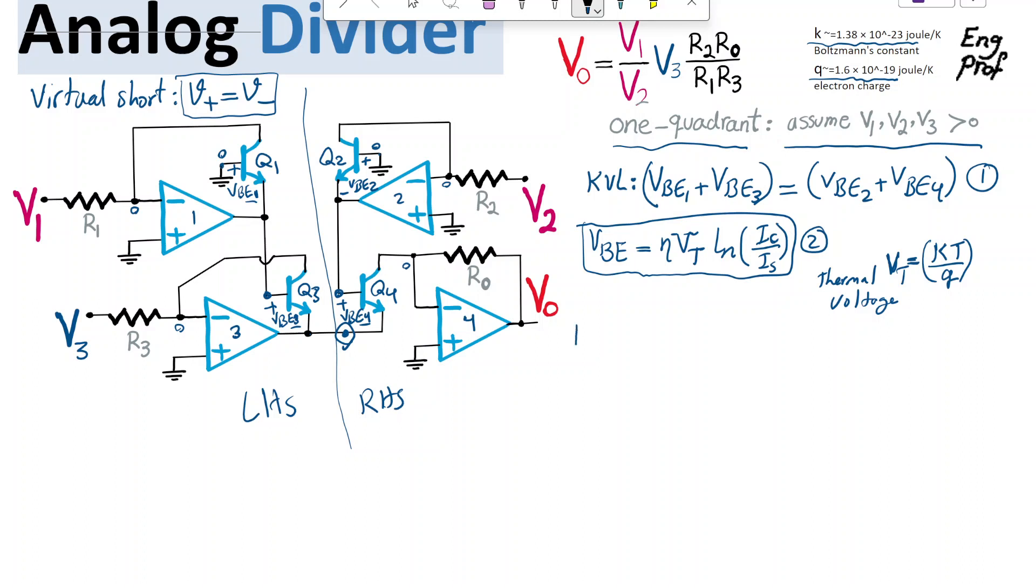So I'm going to use from one and two. You can see that if I substitute for all base emitters, assuming all these four transistors, they have the same junction properties, they are in the same substrate, and we're assuming that they have the same eta VT common.